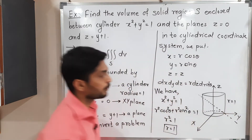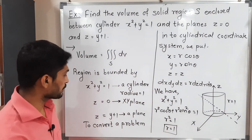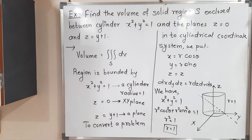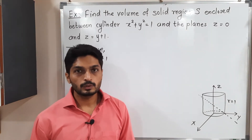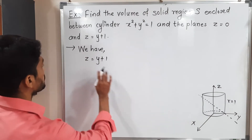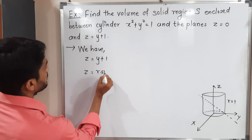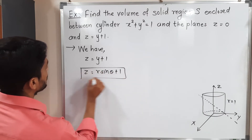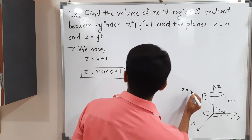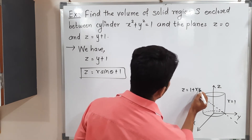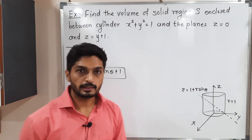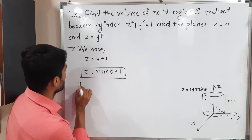Now converting the second equation z = y + 1 into cylindrical coordinates: z remains z, and y = r sinθ, so z = 1 + r sinθ. This is the equation of the cross plane in cylindrical form.